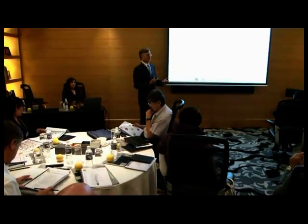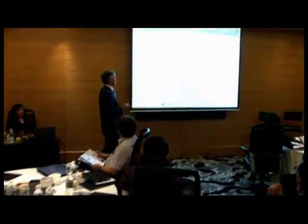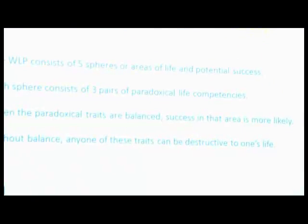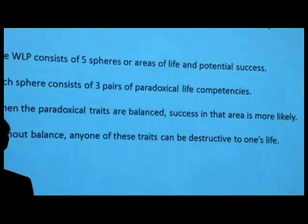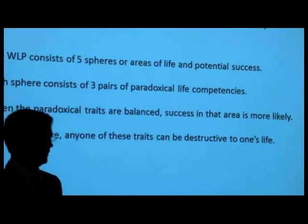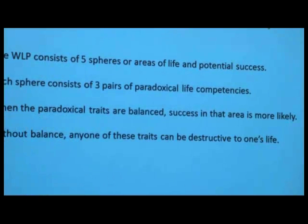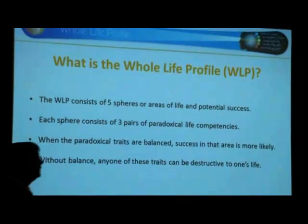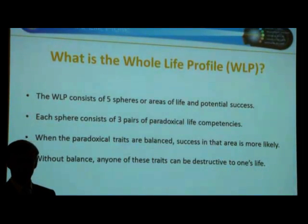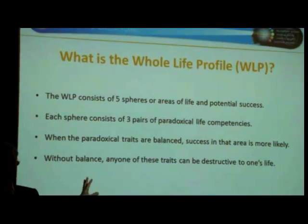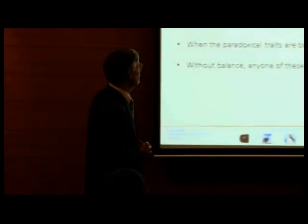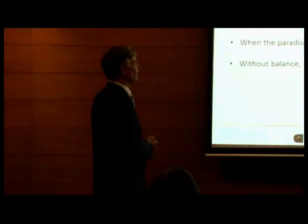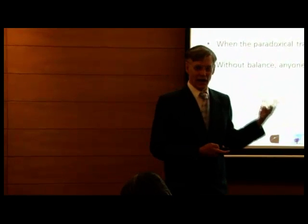The whole life profile consists of five spheres, and each is an area of life or potential success. If you think about success, a narrow view would be just financial success, but this is a much broader view — it looks at success in five different areas. Each sphere consists of three pairs of paradoxical life competencies, so all the traits here are paradoxical. When the paradoxical traits are balanced, success in that area is more likely.